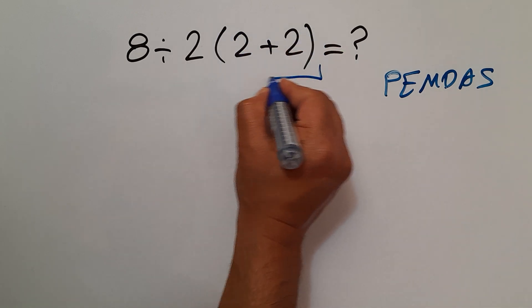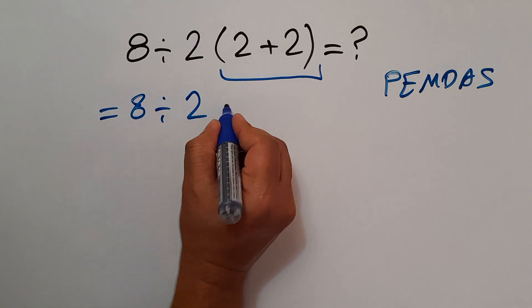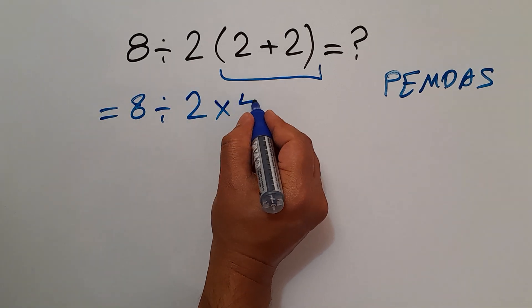2 plus 2 equals 4. So 8 divided by 2, then times just 4.